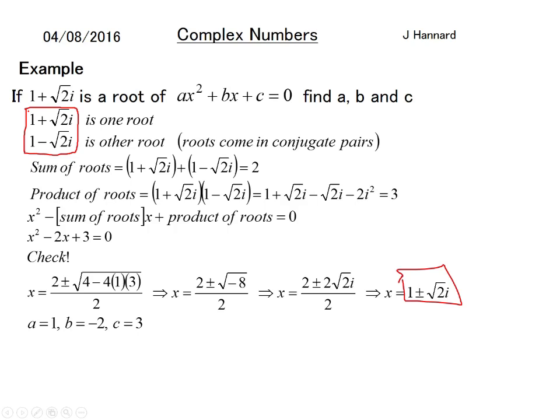So if you're given one complex root, you know the other one instantly. Remember: x² - (sum of roots)x + (product of roots) = 0, and you're on to a winner. Also remember i² = -1.